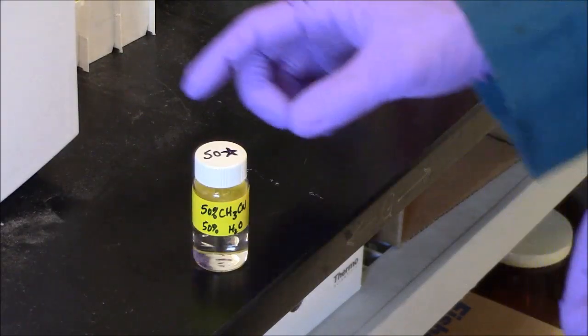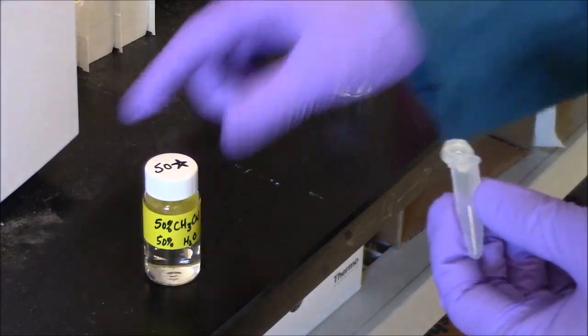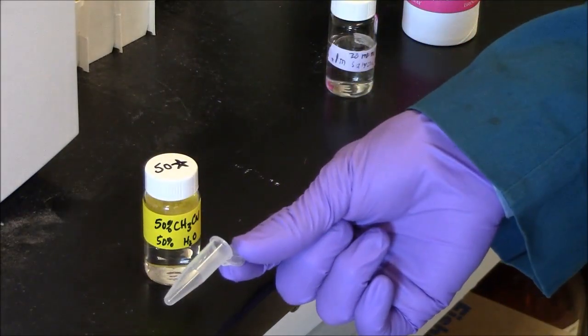For the esters, the recommended diluent will be 50-star, 50% water, 50% acetonitrile. And I'll make the dilution in an Eppendorf tube.